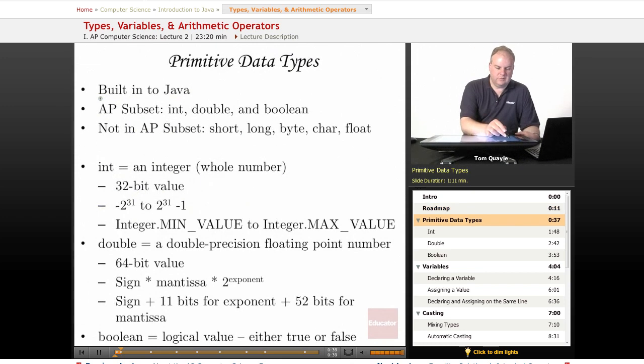Primitive data types are the data types that are built into Java. In the AP subset, there are only three that you need to be concerned with: int, which stores integers or whole numbers; double, which stores floating point numbers with a decimal or fractional portion; and boolean, which stores only true or false values.